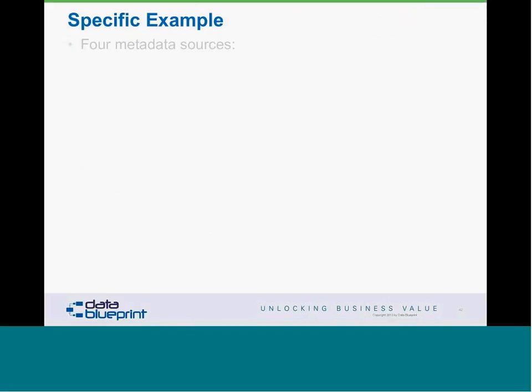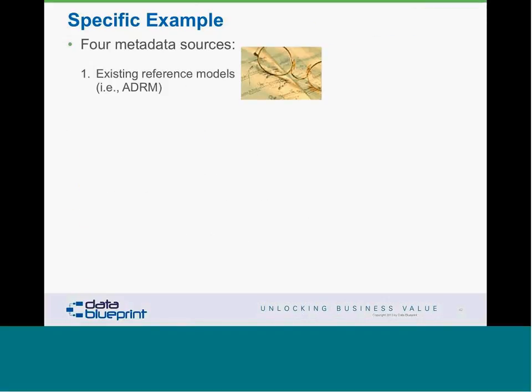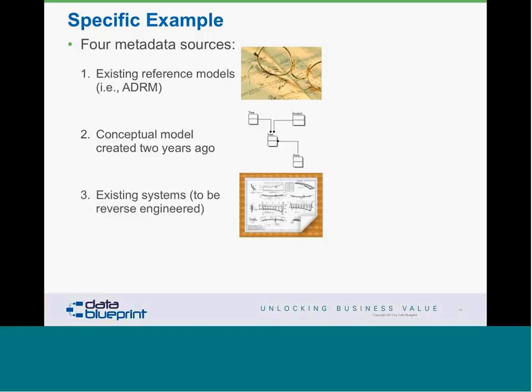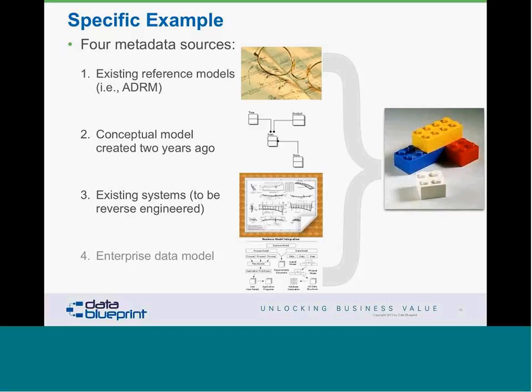Here is a specific example of metadata sources. We may have four types: existing reference models that an organization has purchased — for example, ADRM is a reference model for retail organizations; a conceptual model created a few years ago; existing systems that need to be reverse engineered; and an enterprise data model. All of these need to be integrated together — and that is metadata integration, which is very important.